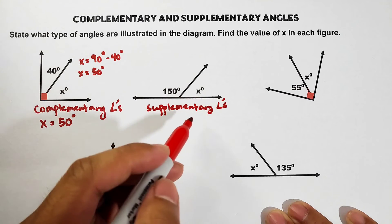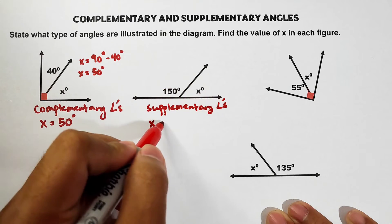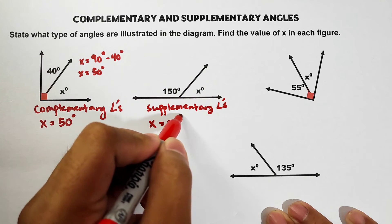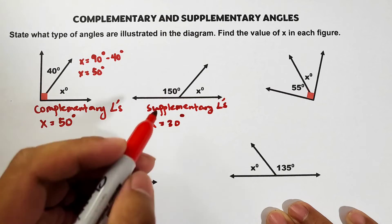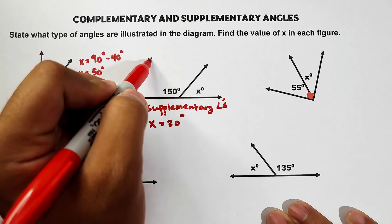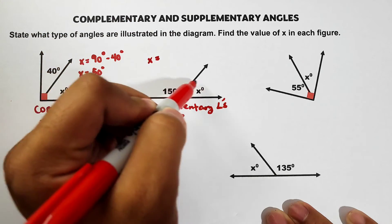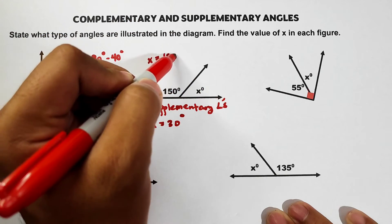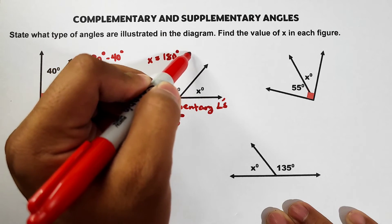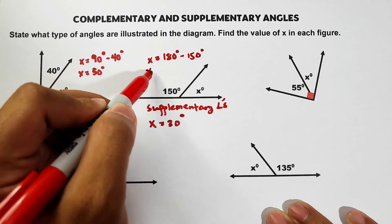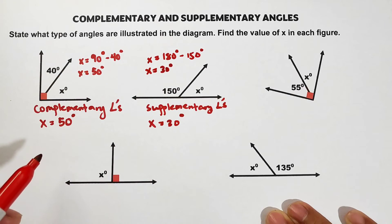What about the value of x? This angle measures 30 degrees. How did you get 30 degrees? x equals — your sum is 180 — so 180 minus 150 degrees gives you x equals 30 degrees, as simple as that.